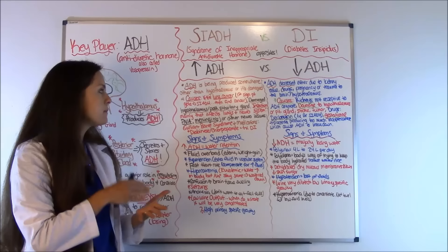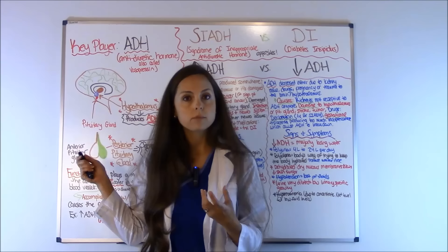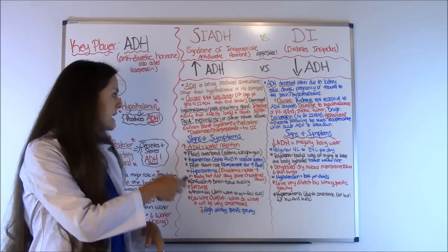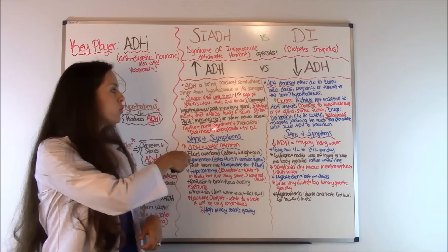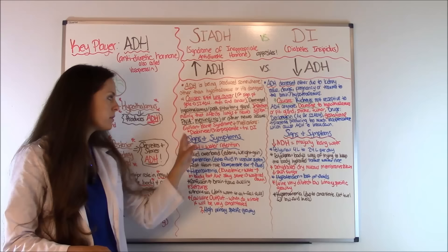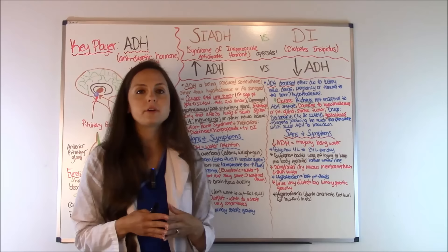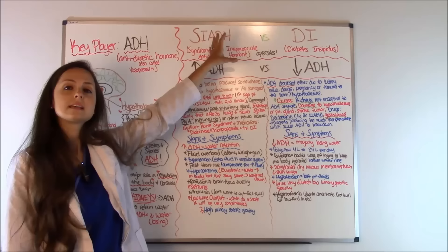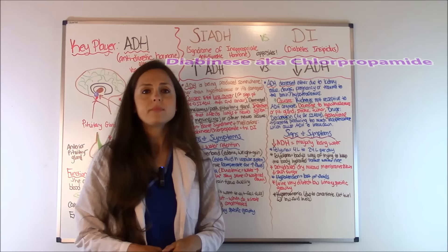Other causes of SIADH include damage to the hypothalamus or posterior pituitary gland. Infections can also cause it — such as pneumonia in the lungs or neurological infections like meningitis and Guillain-Barré syndrome. Medications can cause it as well. One particular medication to remember is Diabinese (generic: chlorpropamide) — it's actually used to treat diabetes insipidus because it has properties that increase the anti-diuretic hormone. But if it increases it too much, it can send the patient into SIADH.